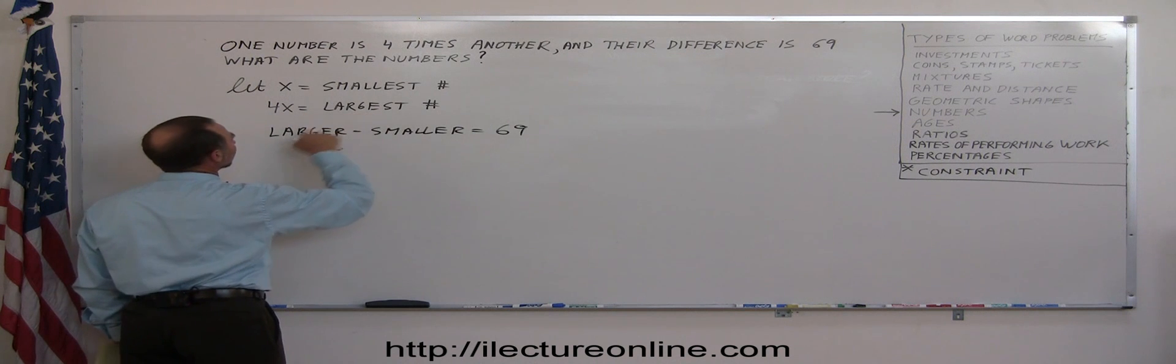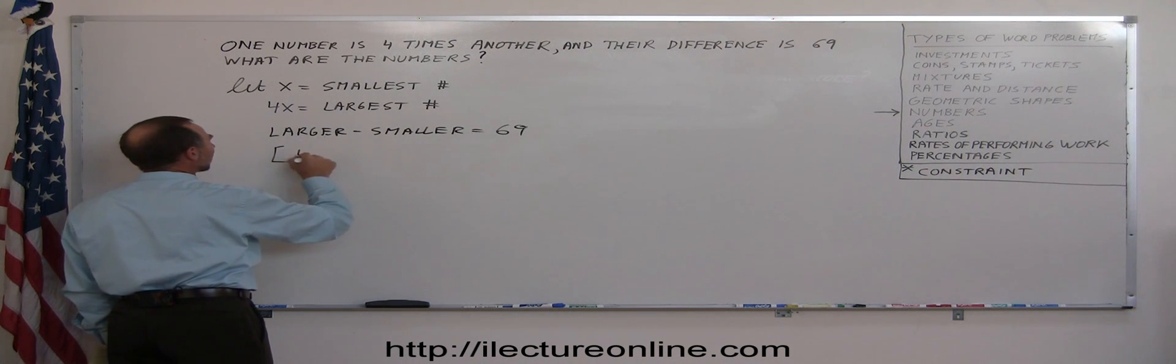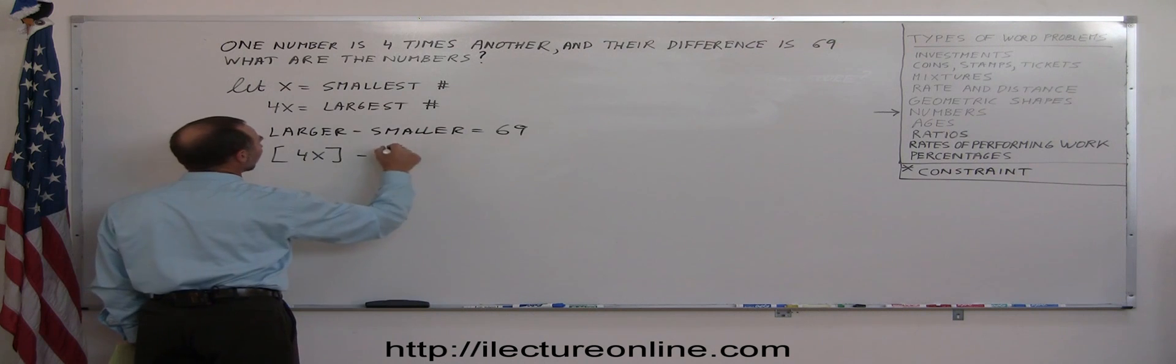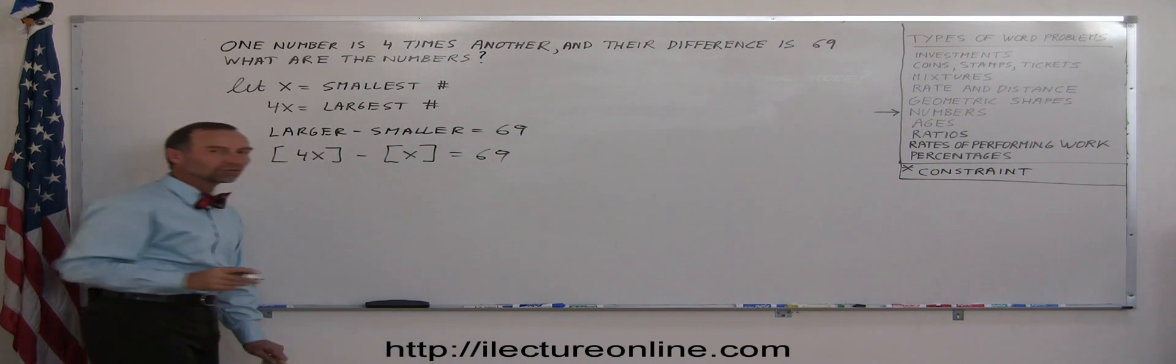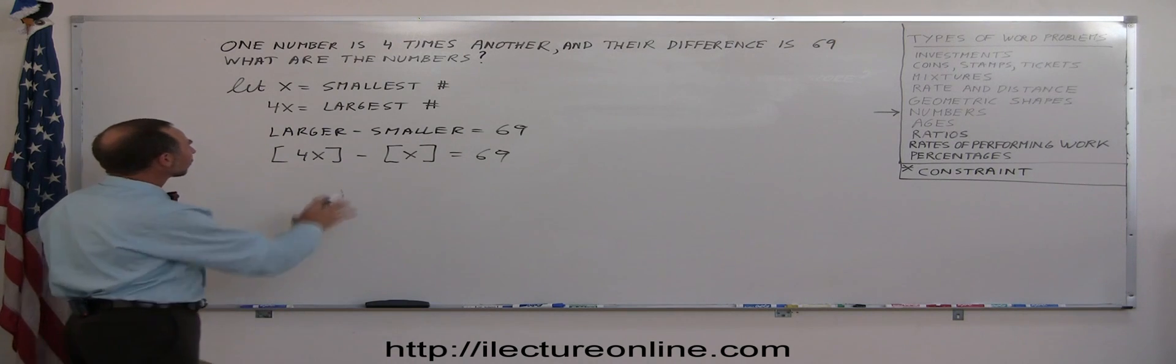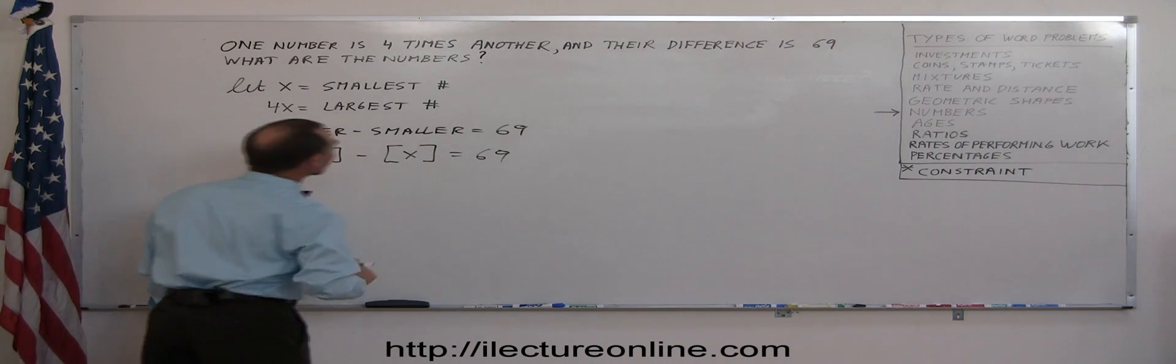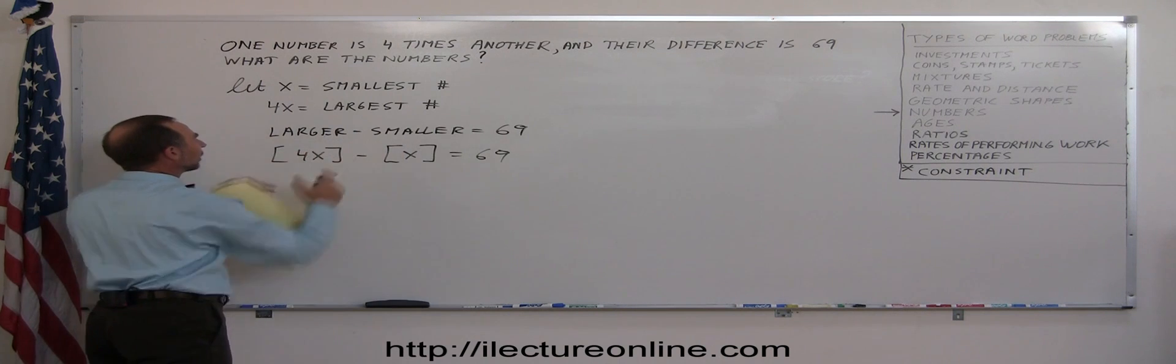The larger of the two numbers is 4x, and now we replace what they are. So 4x minus the smaller number, which is x, equals 69. So always try to put the problem in some sort of equation, and then substitute what the items are.